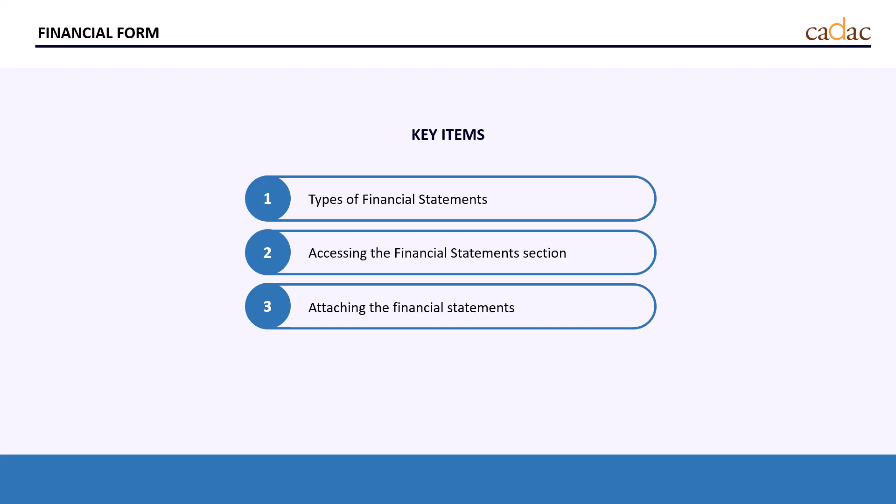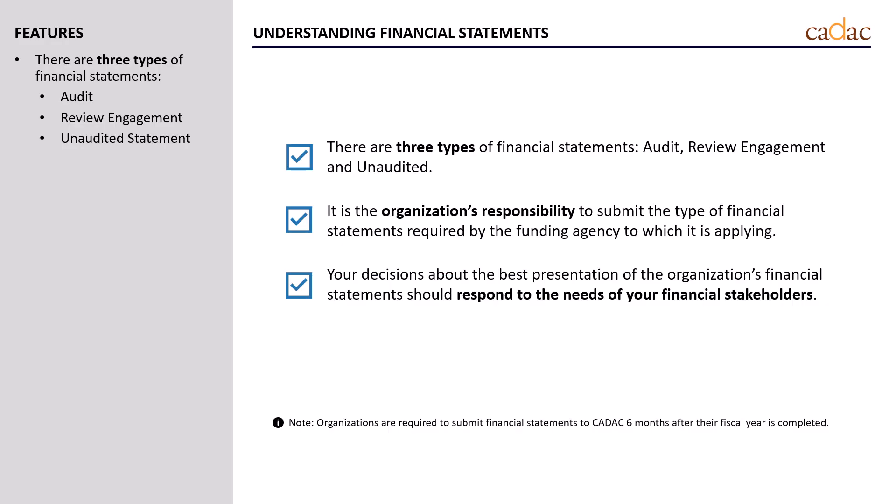Now let's start by reviewing the three types of financial statements. There are three types of financial statements: the audit, the review engagement, and the unaudited financial statement. Organizations are required to submit financial statements to CADAC six months after their fiscal year is completed. It is the organization's responsibility to submit the type of financial statements required by the funding agency to which it is applying.